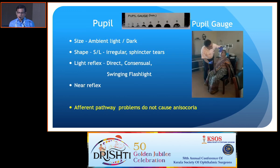For pupil examination, you should check in ambient light, using the pupil gauge, assessing the size, the shape, the light reflex, the direct consensual and swinging flashlight test, and the near reflex. It is very important to ask the patient to look into the distance so that they are not looking at your face, and your face should not come in the way, so that it does not stimulate accommodation.